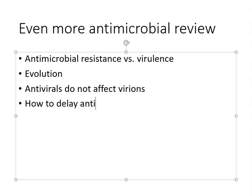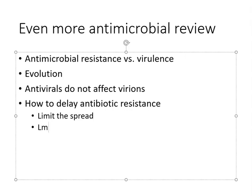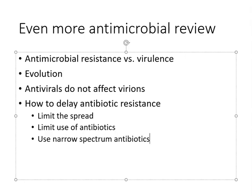How to delay antibiotic resistance: limit the spread of pathogens, which limits genetic variation. Limit use of antibiotics — if you don't need to use them, don't, because you don't want to put artificial selection pressure for antibiotic resistance on a population. Use narrow-spectrum antibiotics, which avoids putting selection pressure unnecessarily on many species that aren't causing a problem. Broad-spectrum antibiotics select for antibiotic resistance in the microbiota where there's no reason for it.